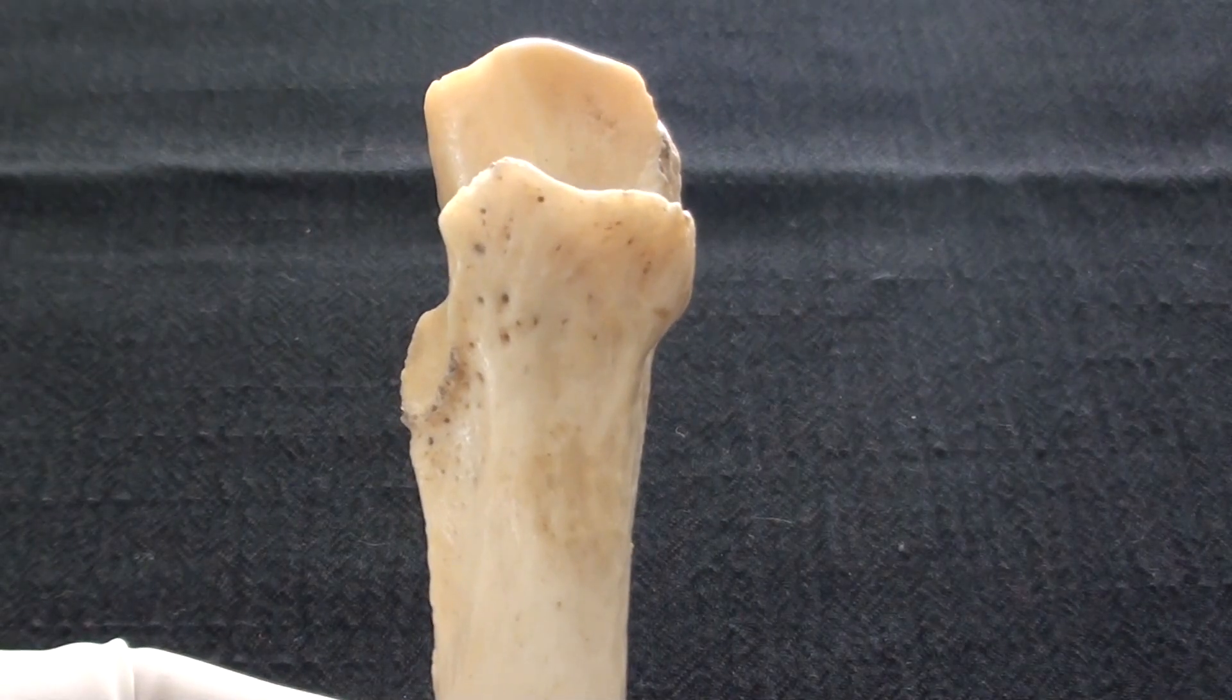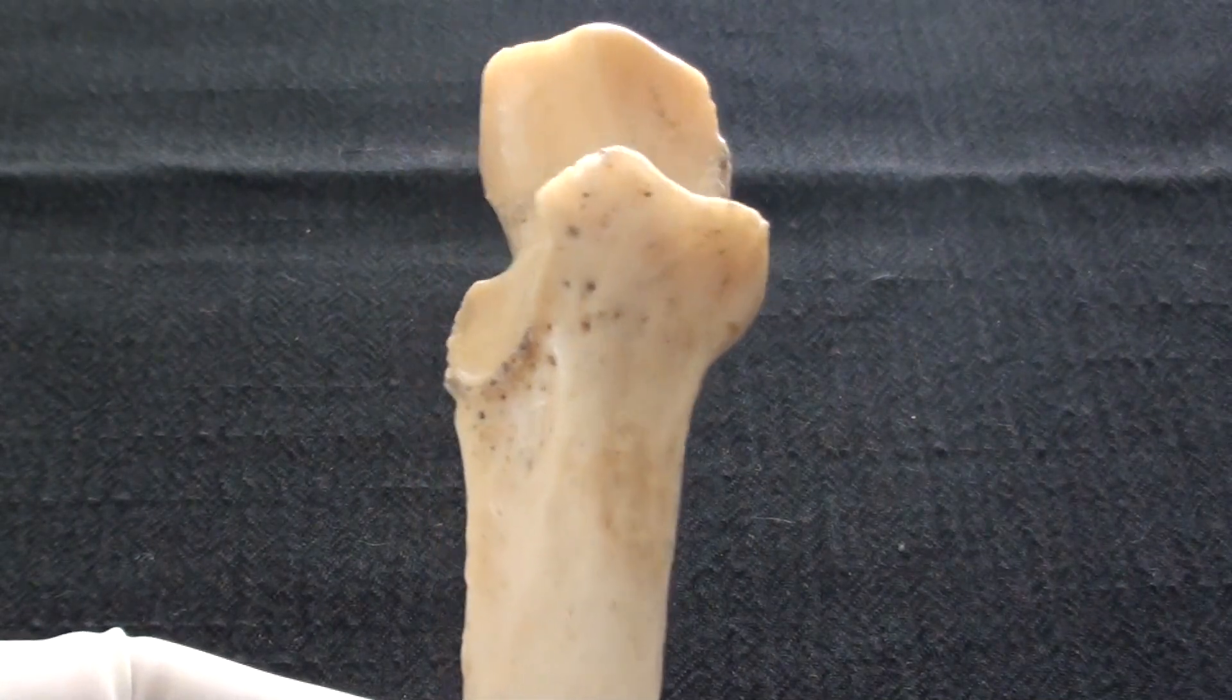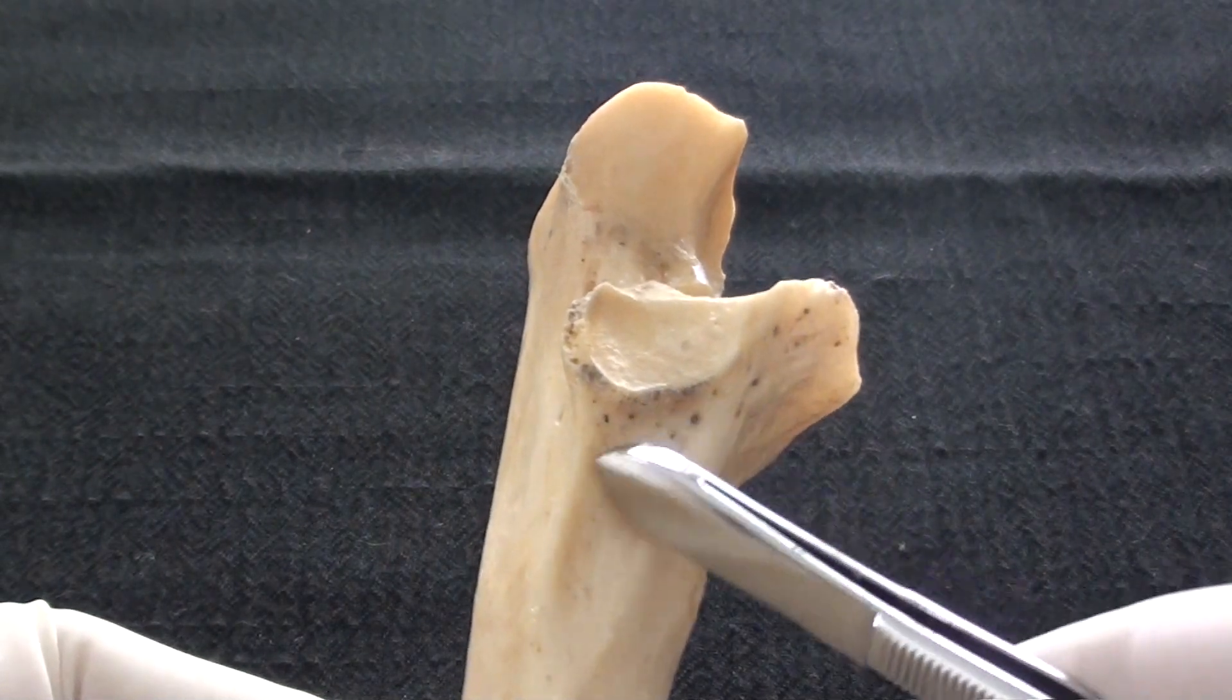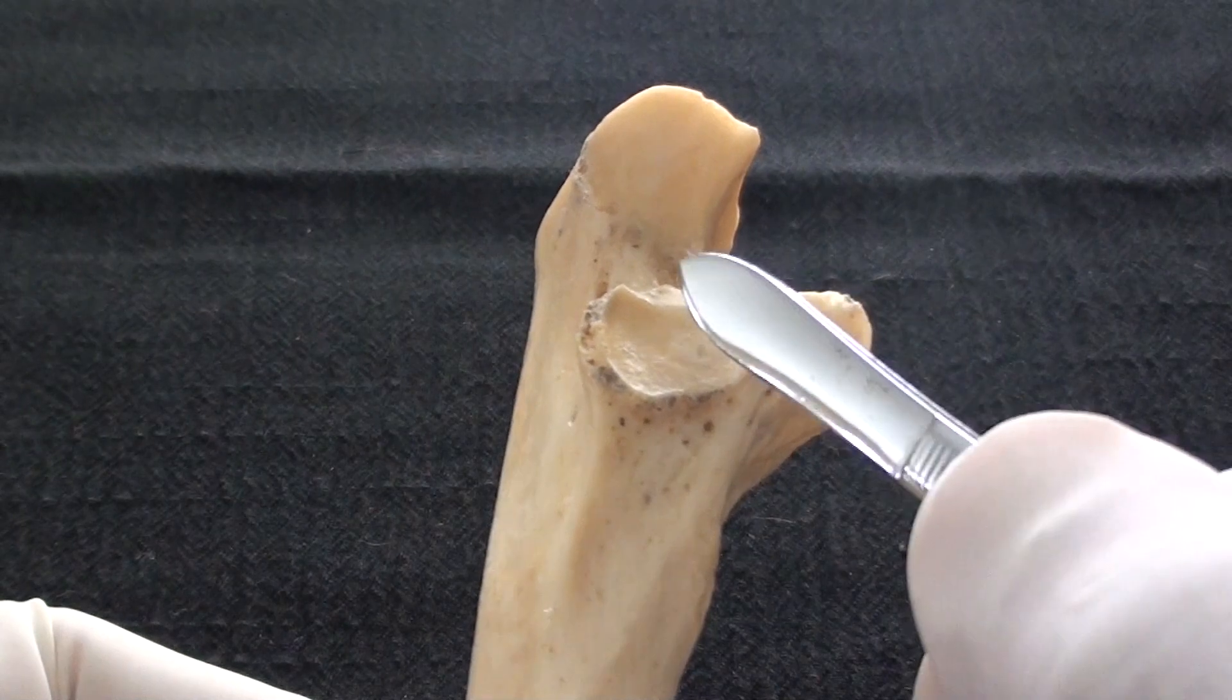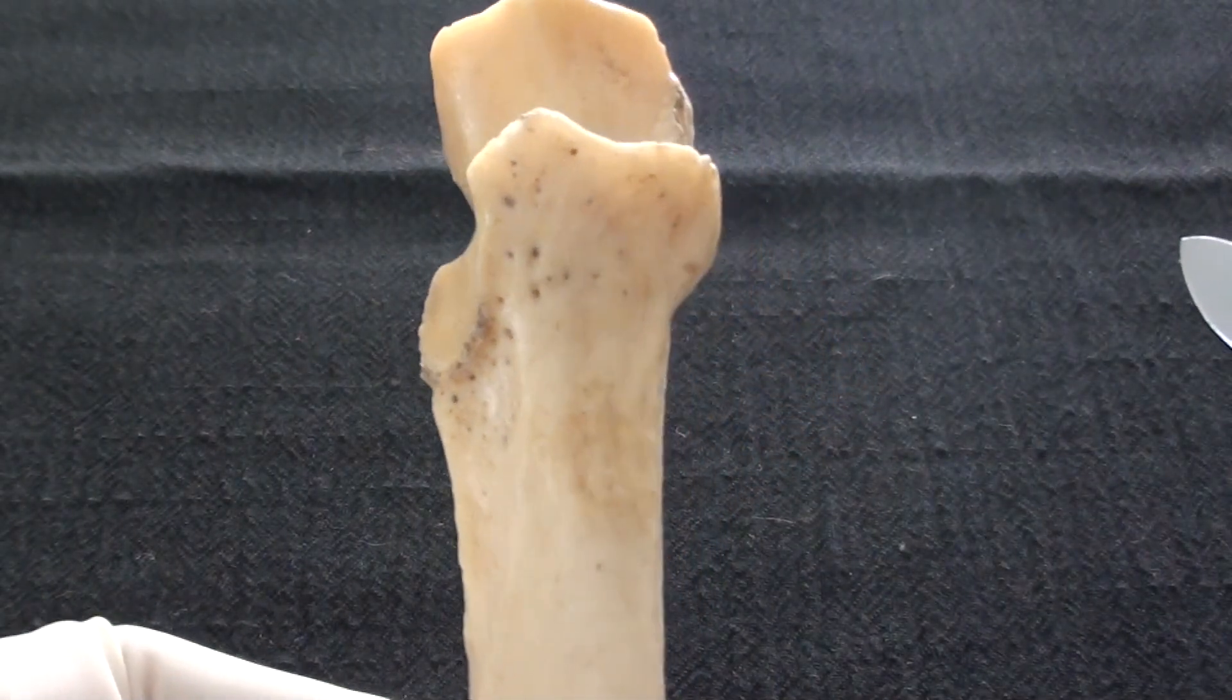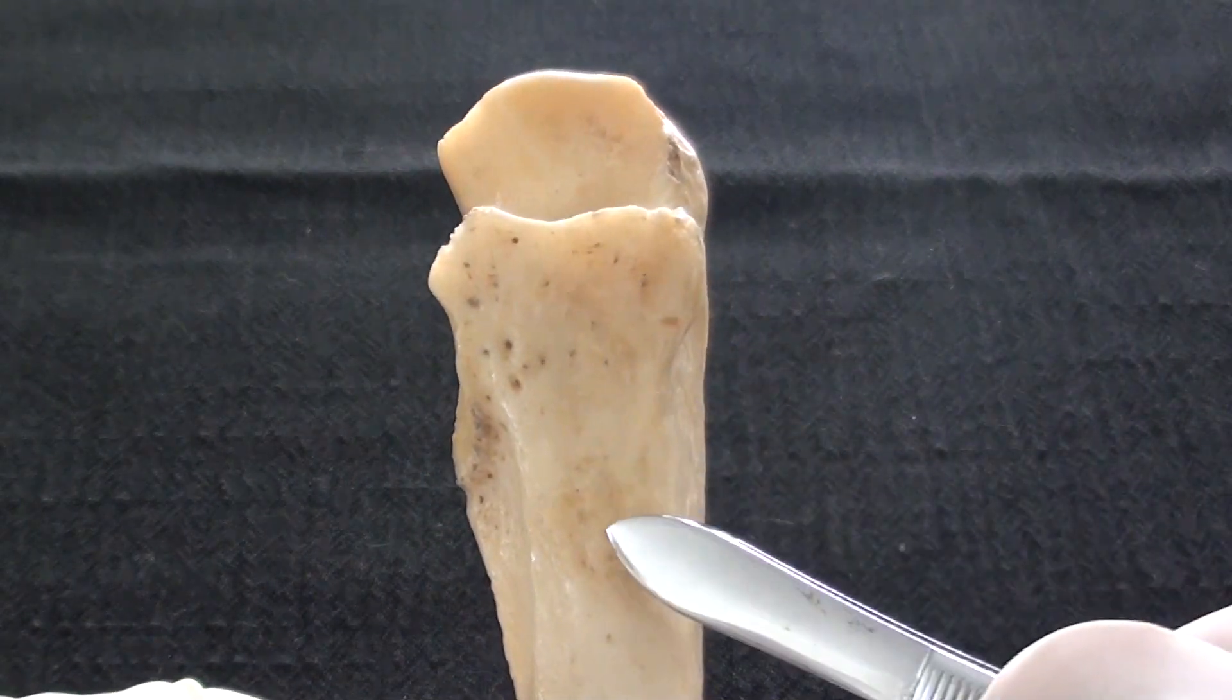Let's take another look at the proximal ulna, but this time more from the anterior direction. This is the lateral surface where we have seen the supinator fossa and the supinator crest. This is the radial notch of the ulna, so I will turn the bone practically by about 90 degrees in order to show the anterior surface.